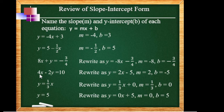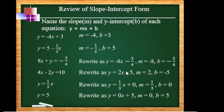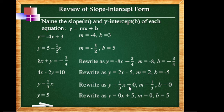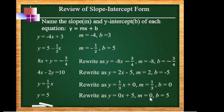Number 4: 4x minus 2y = 10. Transpose 4x to get negative 2y = negative 4x plus 10, then divide all terms by negative 2. So it becomes y = 2x minus 5. Ang m natin ay 2 and y-intercept b is negative 5. Number 5: y = one-third x. Walang b, so b = 0, meaning y = one-third x plus 0. Slope is one-third and b = 0. Last: y = 5. The mx term is missing, so the slope is 0. We have y = 0x plus 5, so m = 0 and b = 5.